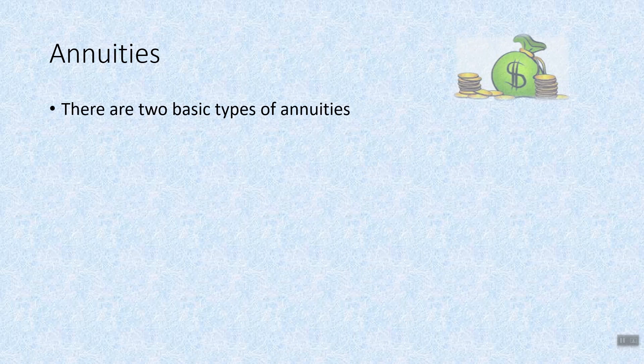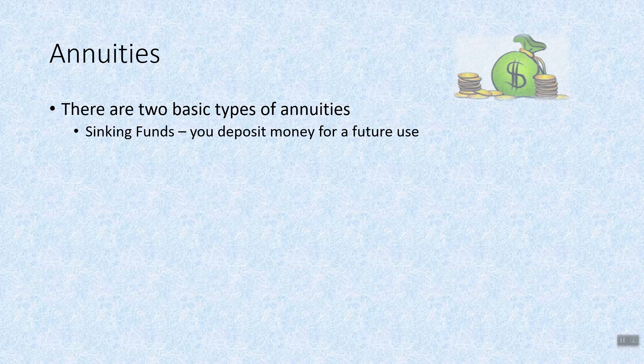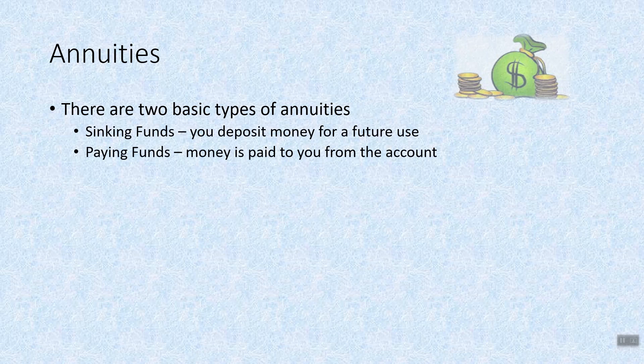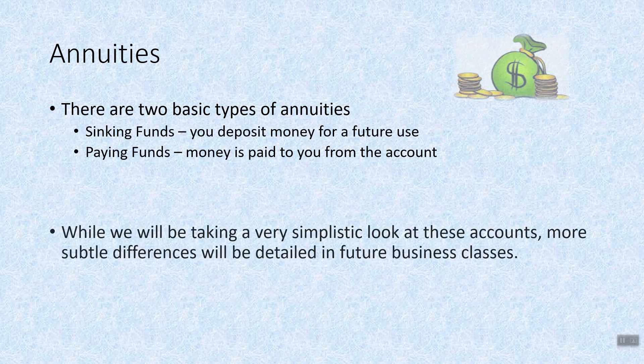There are two basic types of annuities we're going to address in this class. One is a sinking fund, where you deposit money for a future use, and the other is a paying fund, where money is paid to you from the account. This is called a regular annuity. We will be taking a very simplistic look at these accounts. More subtle differences will be detailed in future business classes.